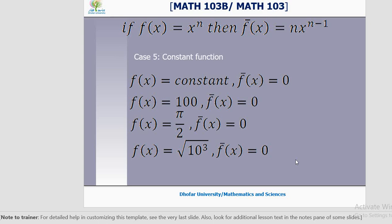The constant function means f of x equals a number. The graph of this function is a horizontal straight line — if positive, the line is above; if negative, below the x-axis. The derivative of a constant function is 0. Derivative of 100 is 0, derivative of pi by 2 is 0. Do not calculate the number — the derivative of all numbers, big or small, negative or positive, is 0.